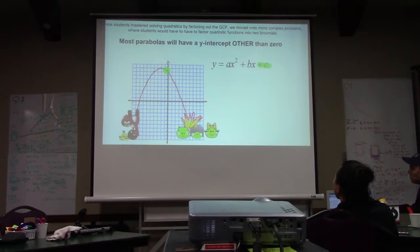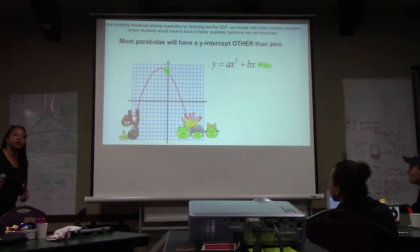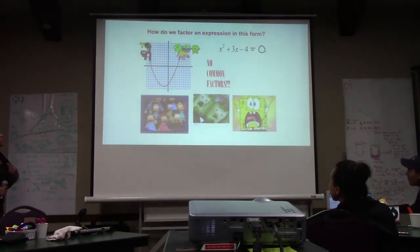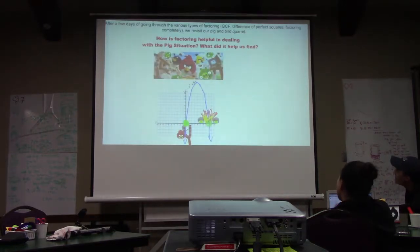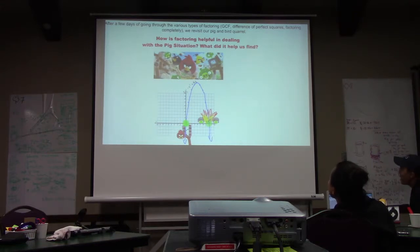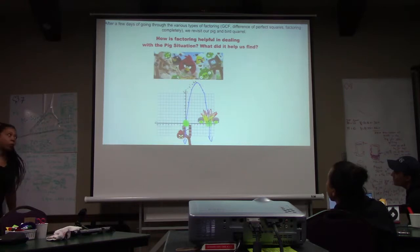Once students mastered solving quadratics by factoring out the GCF, we moved on to more complex problems where students had to factor quadratic functions into two binomials where the y-intercept was not zero. Of course, this was a bit challenging for the students, but we got through it. After a few days going through the various types of factoring — GCF, difference of perfect squares, factoring completely — we'd revisit our pig and bird quarrel.